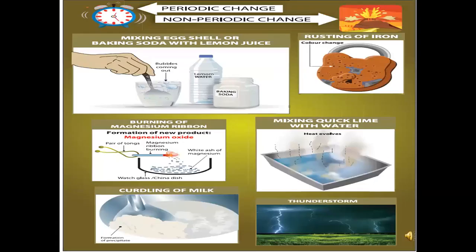Periodic changes are changes that repeat themselves after a definite interval of time — for example, the rotation and revolution of Earth, beating of a heart, and the motion of the seconds, minutes, and hour hands of a clock. Non-periodic changes are changes that do not repeat after a definite interval and occur randomly — for example, running of a batsman between wickets, or the movement of legs while dancing.